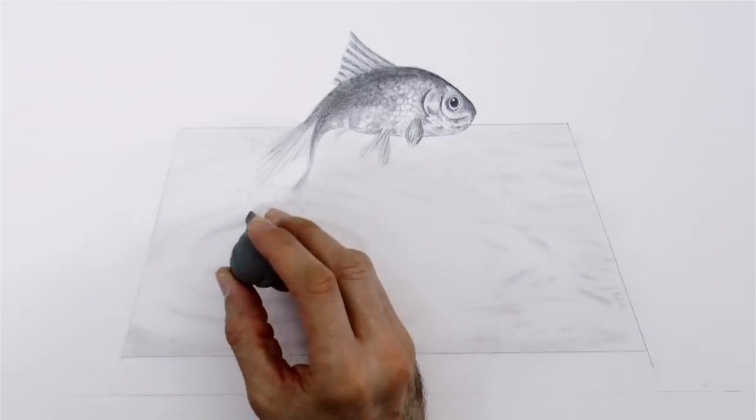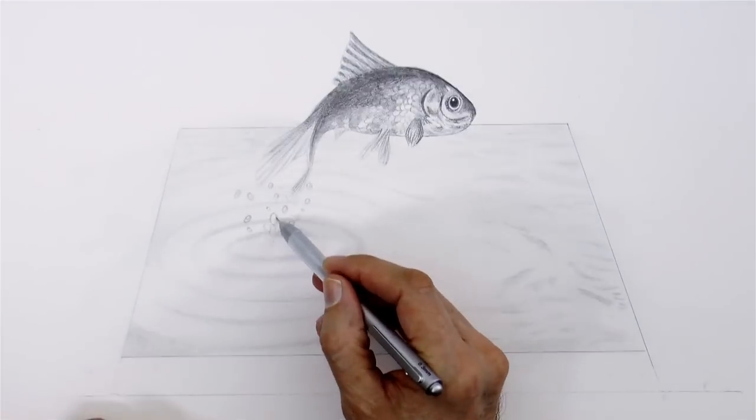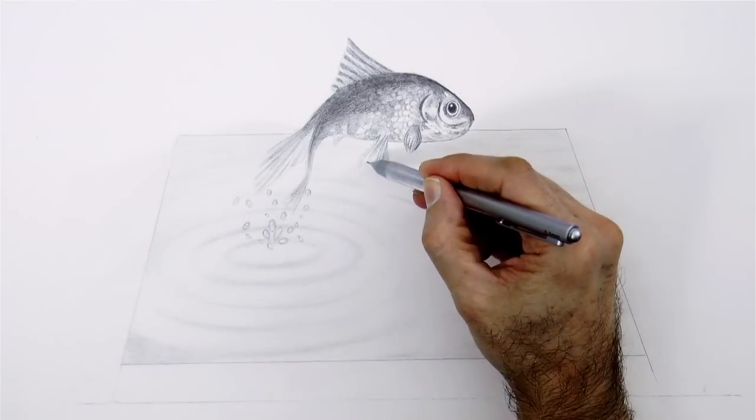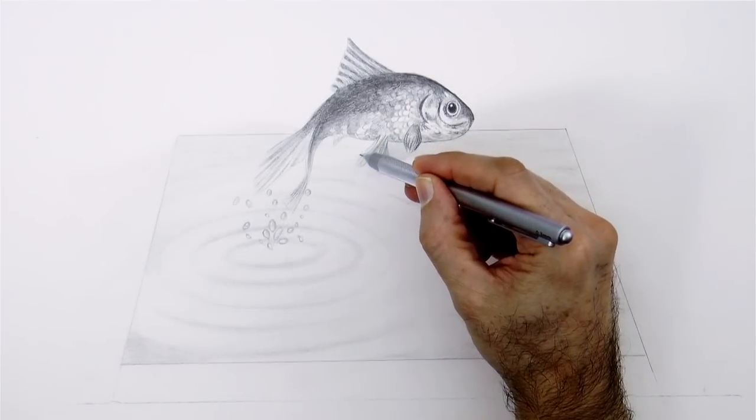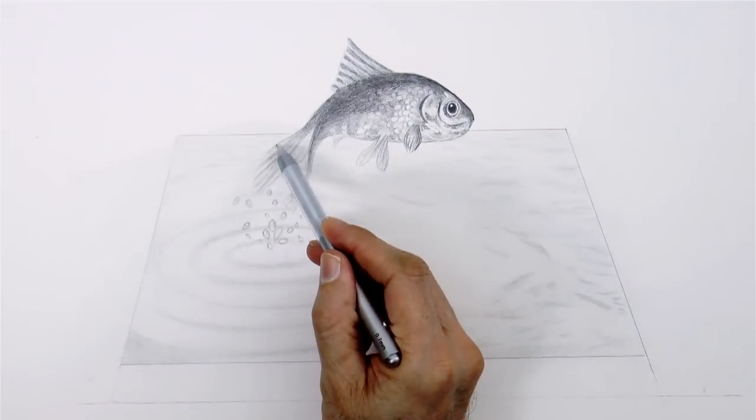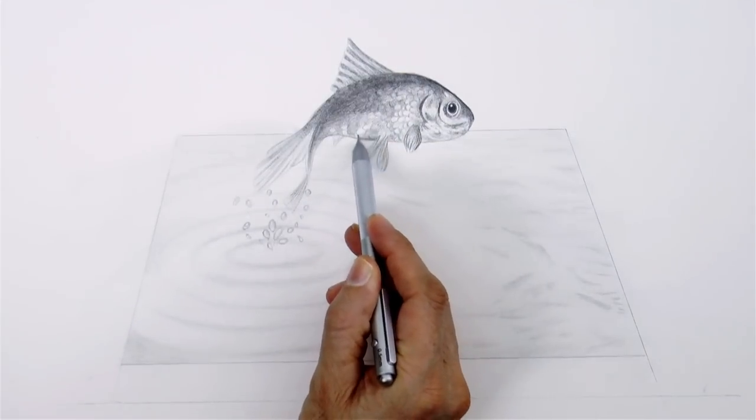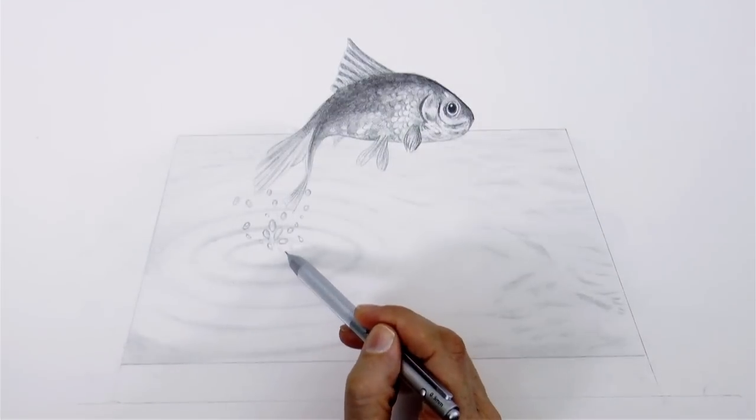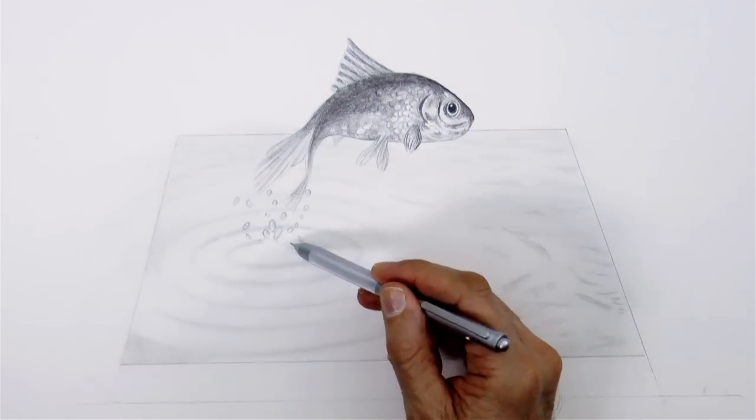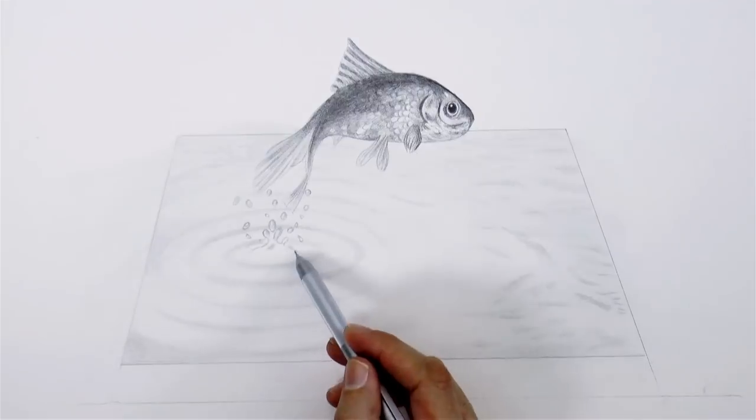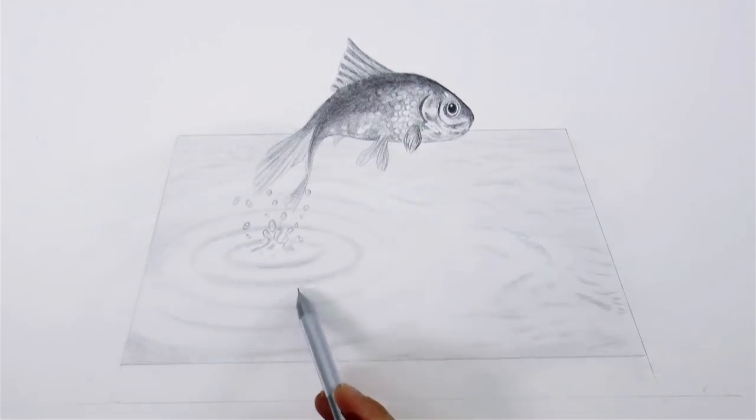I smudge with a chamois and then draw some droplets. I smudged because I want all that surface to have a tone and not to be totally white, so that the whites of the fish will stand out. All the water should be on gray tones, while the fish should be much more contrasting.